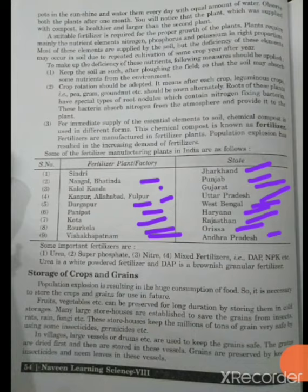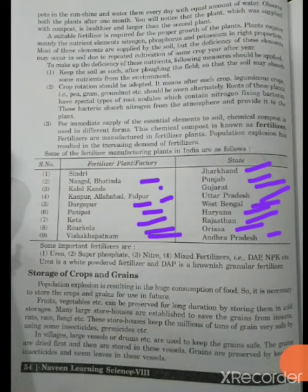Some examples of fertilizers: you are familiar with urea, super phosphate, nitrate, and mixed fertilizers like DAP and NPK. Urea is basically a white powder fertilizer and DAP is a brownish granular fertilizer. Urea is commonly heard in day to day life and comes in a white powdery form.